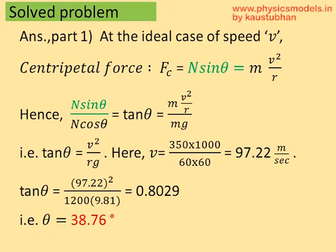Now, we come to the real solution. So we plug in N sin theta equal to m v squared by r for an ideal speed v which is 350 kilometers per hour. We are going to design the track for 350 kilometers per hour.